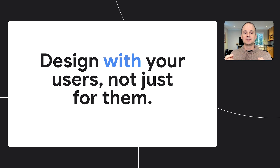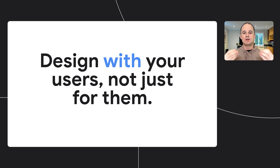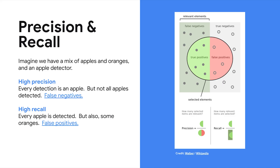For instance, Lookout uses several different image classifiers, and here's how we used user feedback to tune for precision and recall. As a refresher, imagine we have a mix of apples and oranges and an apple detector. If we have a high precision apple detector, the detector is taking no chances — it's only going to say 'apple' if it's certain I have an apple in my hand.